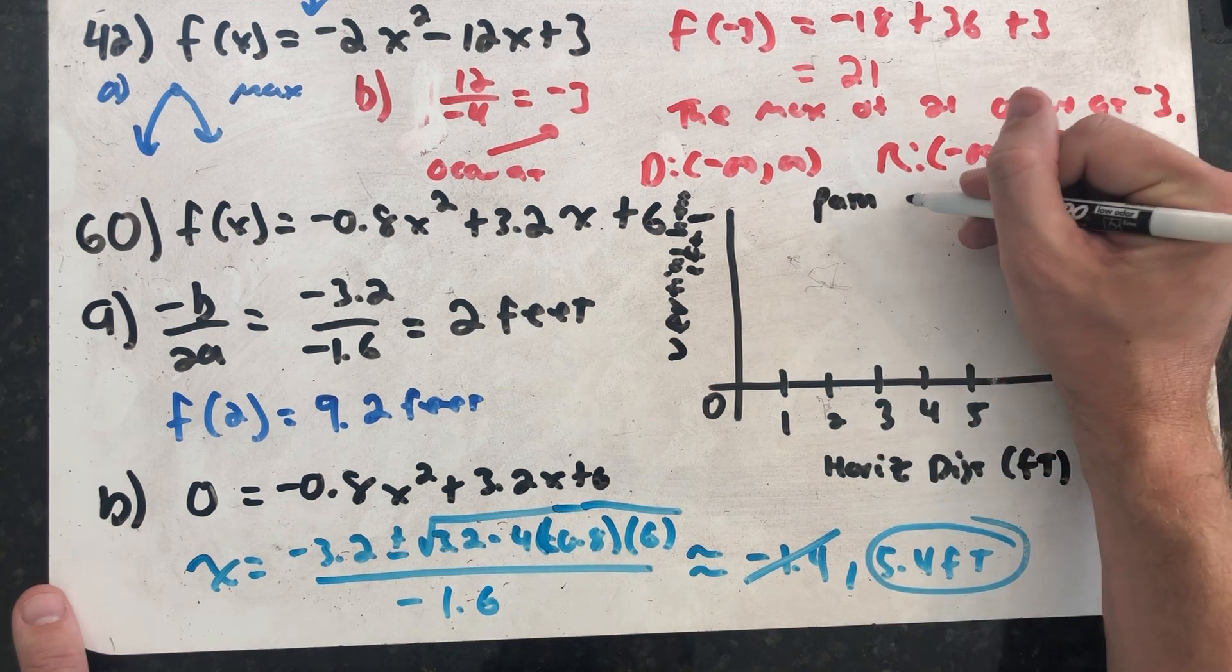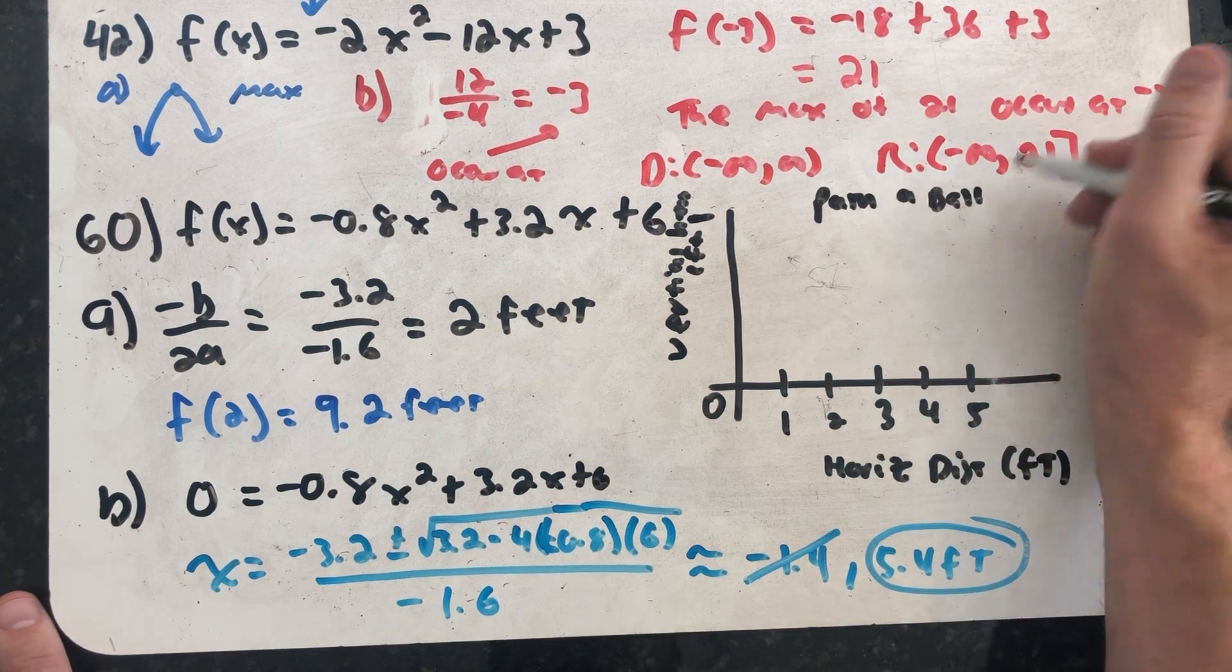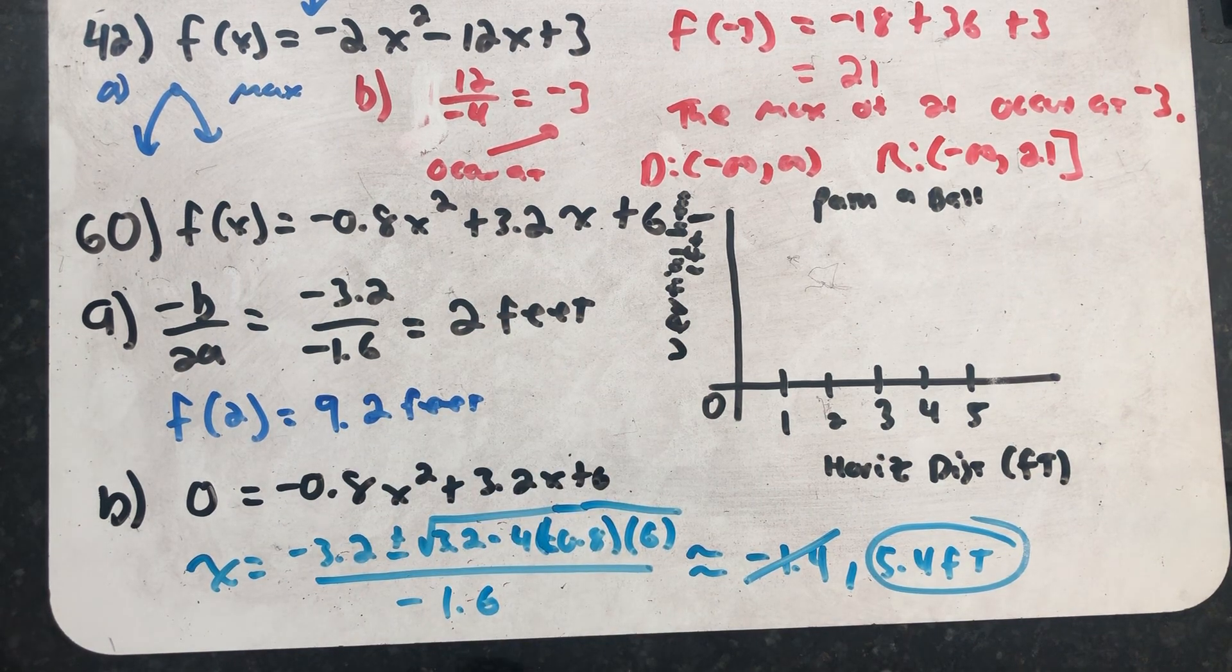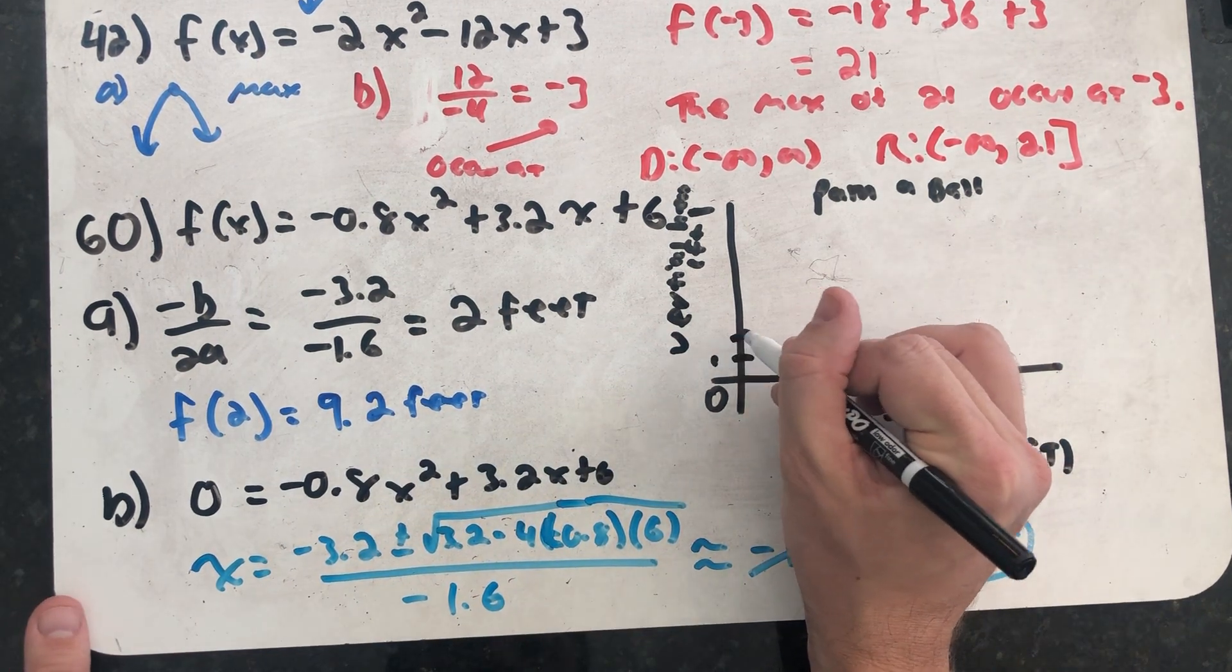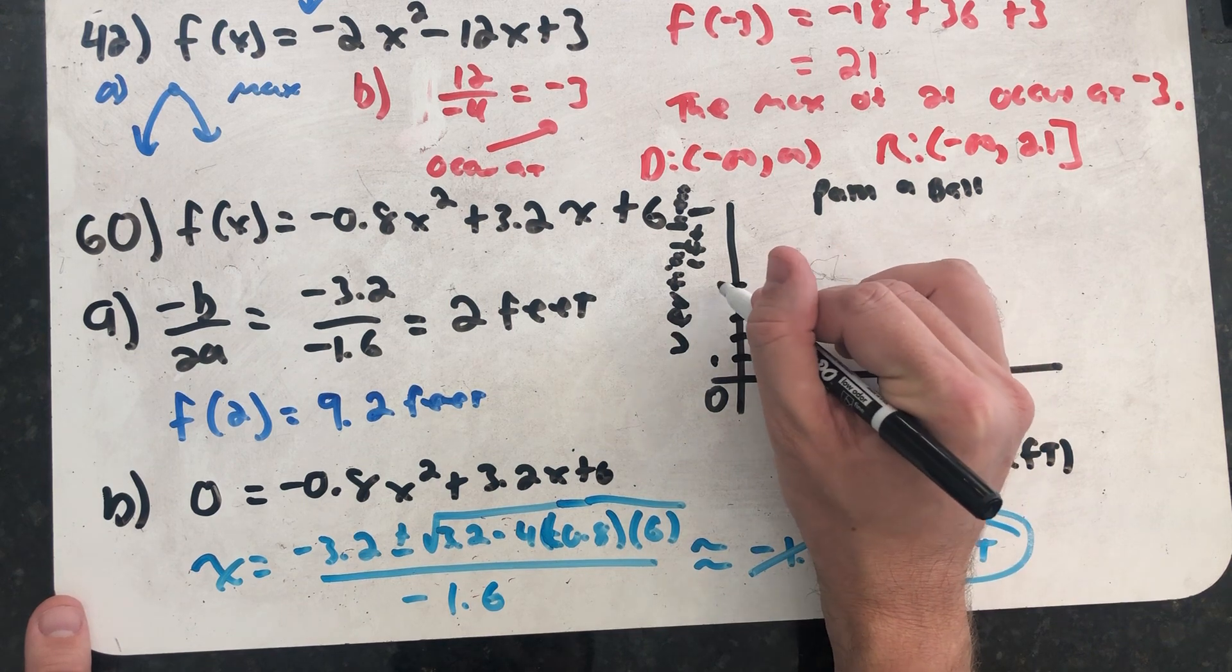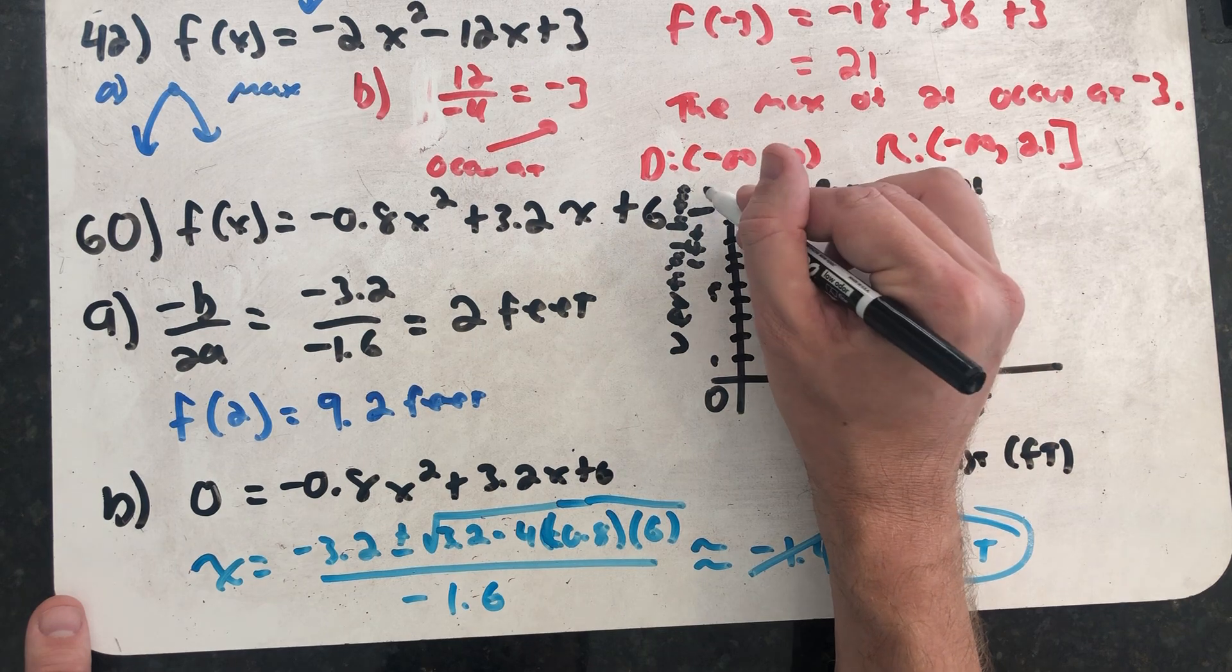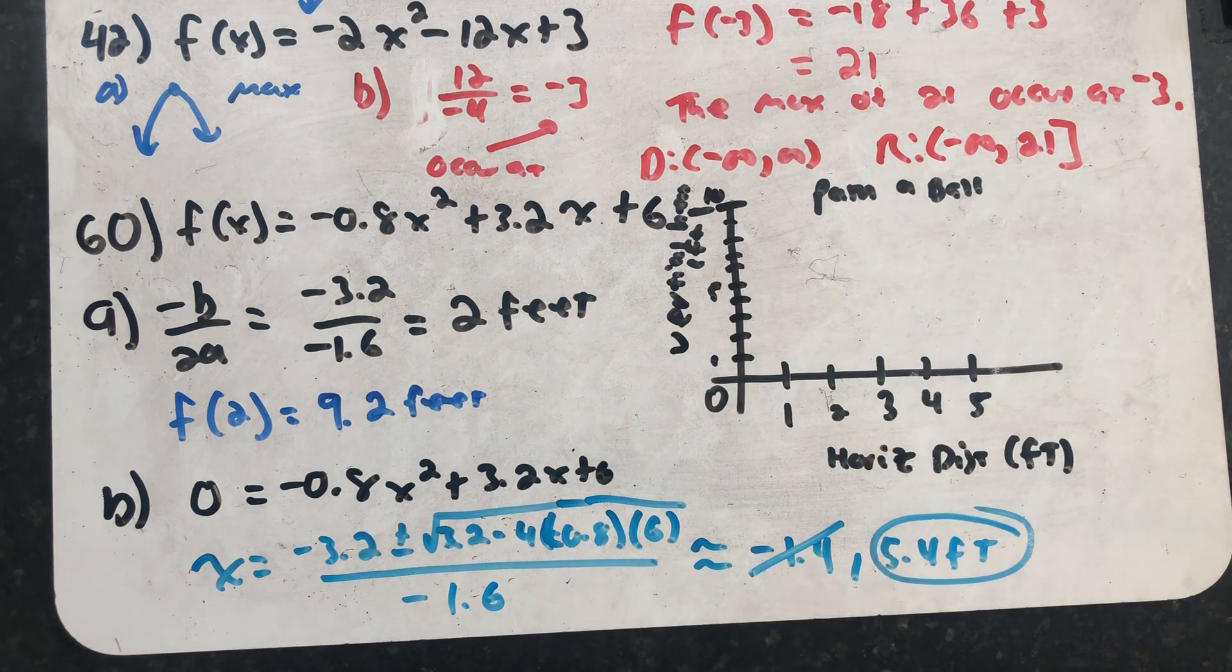When you're graphing a function in application, you should include a title and label both axes, especially labeling the units. And up here at the top, I have 10 feet.